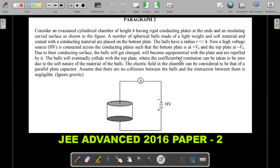Now a high voltage HV is connected across the conducting plates such that the bottom plate is at +V₀ and the top plate is at potential -V₀. Due to their conducting surface, the balls get charged, will become equipotential with the plate and are repelled by it. Balls will eventually collide with the top plate where the coefficient of restitution can be taken to be zero due to the soft nature of the material. The electric field in the chamber is considered to be that of a parallel plate capacitor. Assuming that there are no collisions between the balls and the interaction between them is negligible. Ignoring gravity.